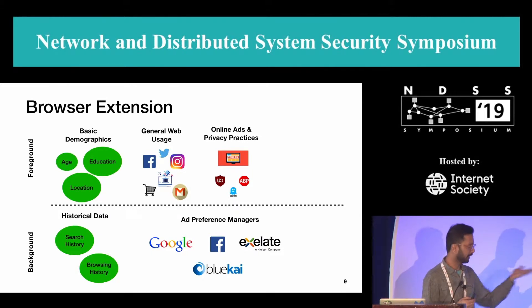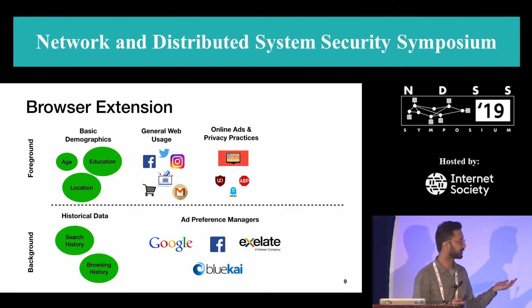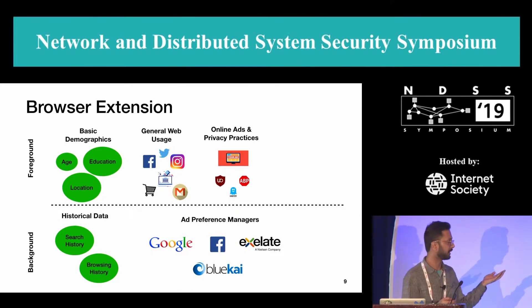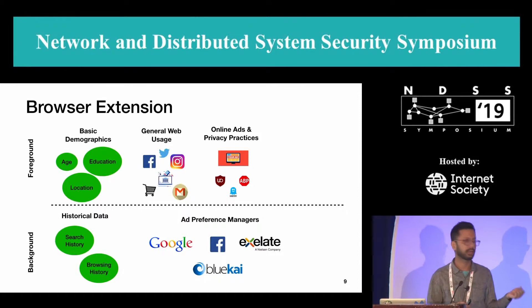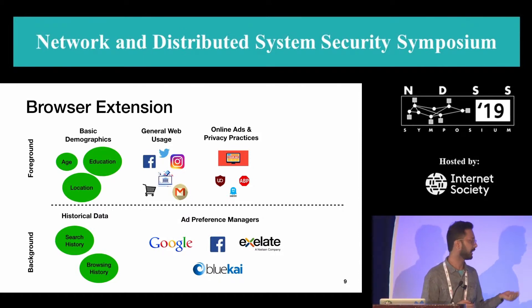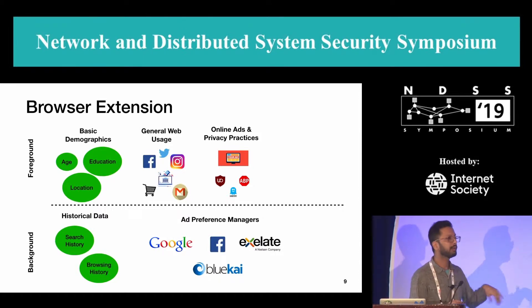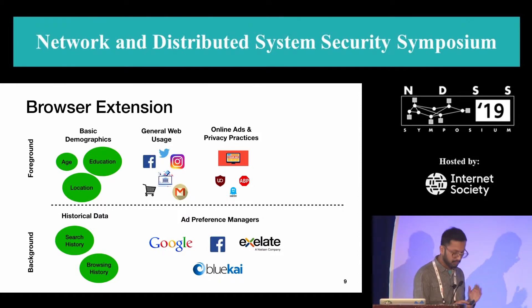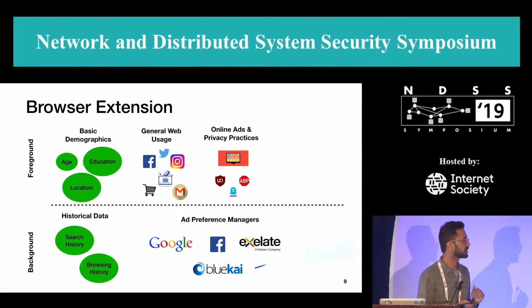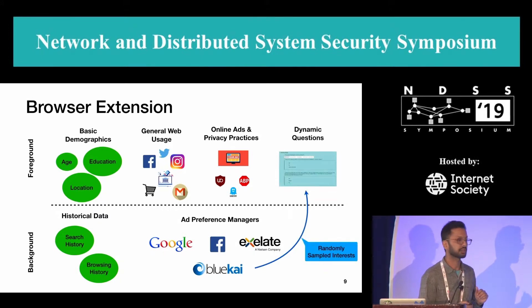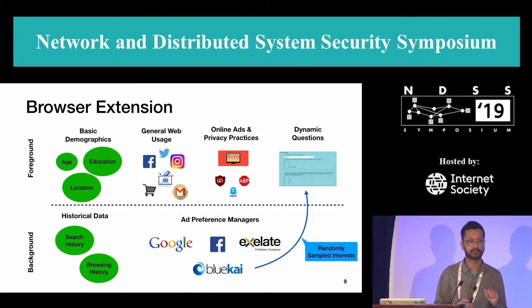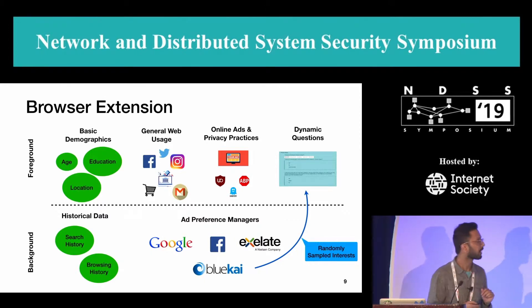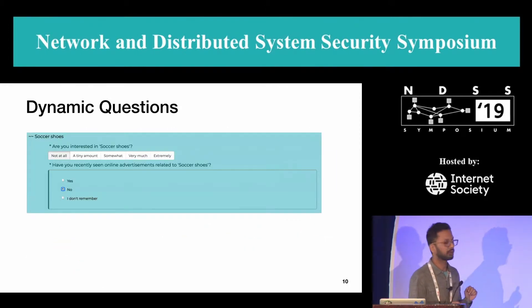In our study we gathered interests from four major APMs: Google, Facebook, Exelate, and BlueKai. While doing this, we also randomly sampled some interests and asked follow-up questions about them in the dynamic part of the survey.